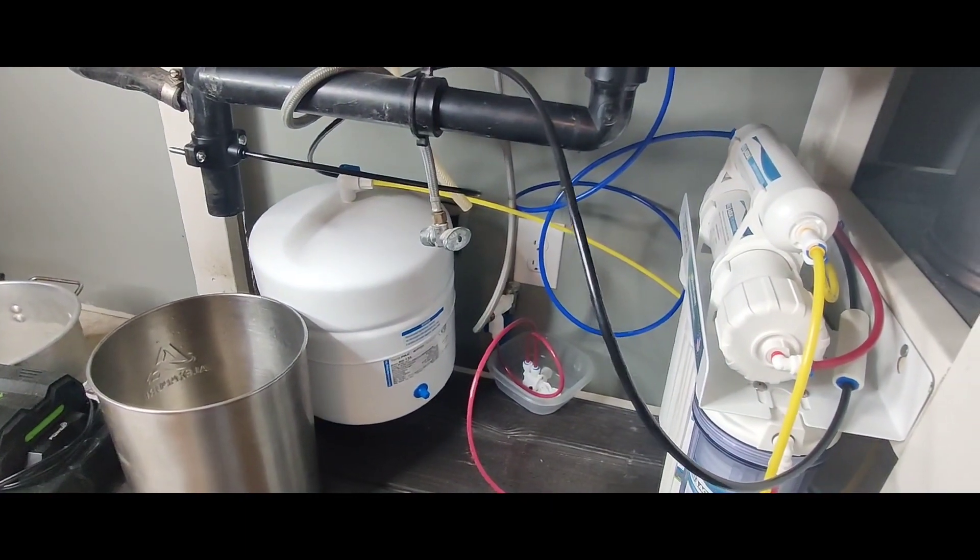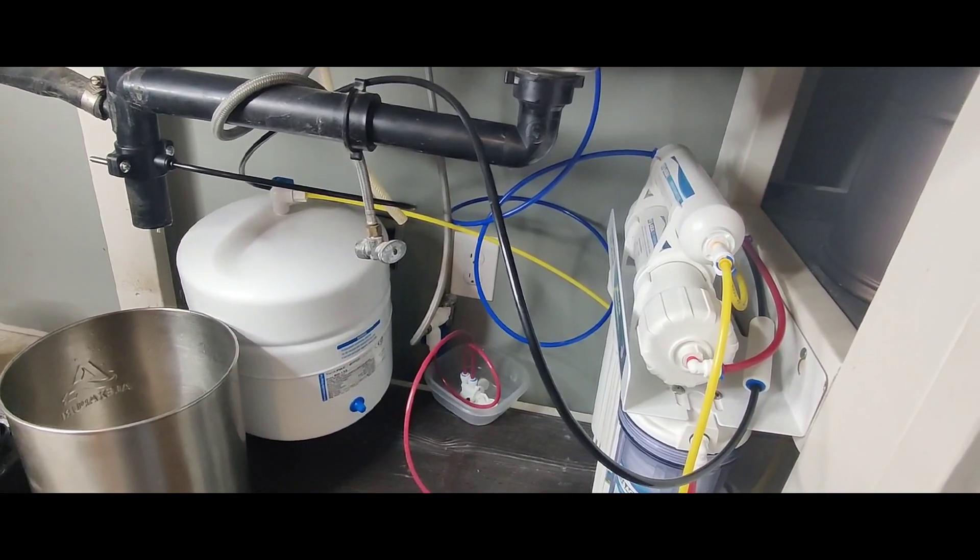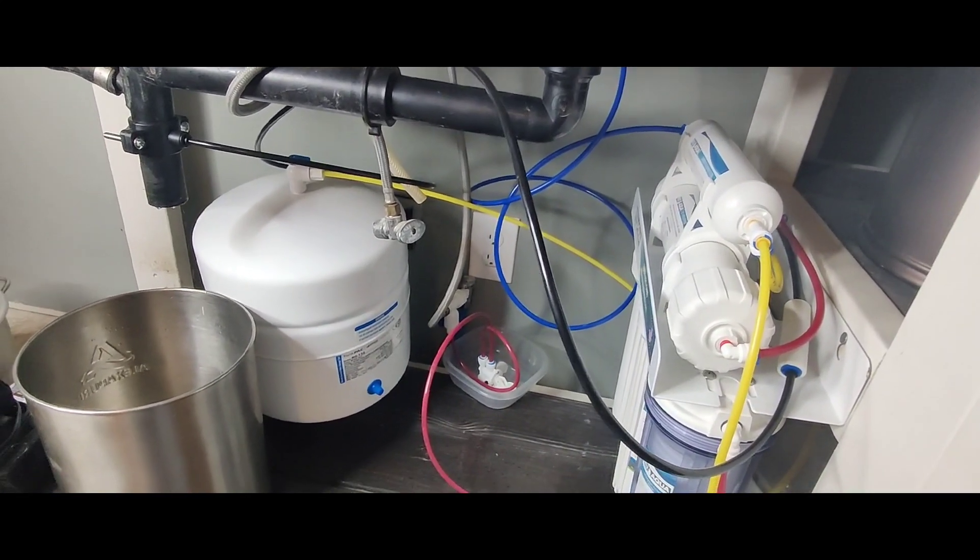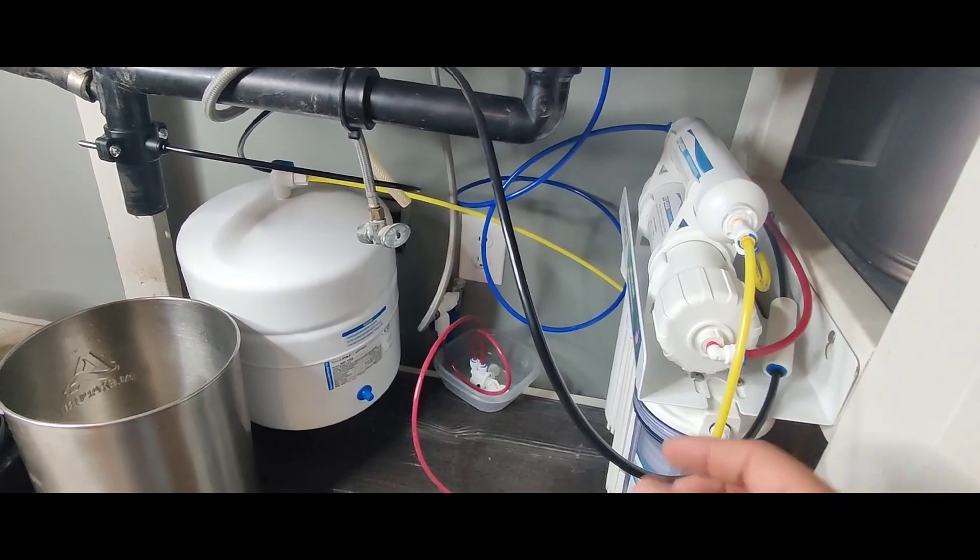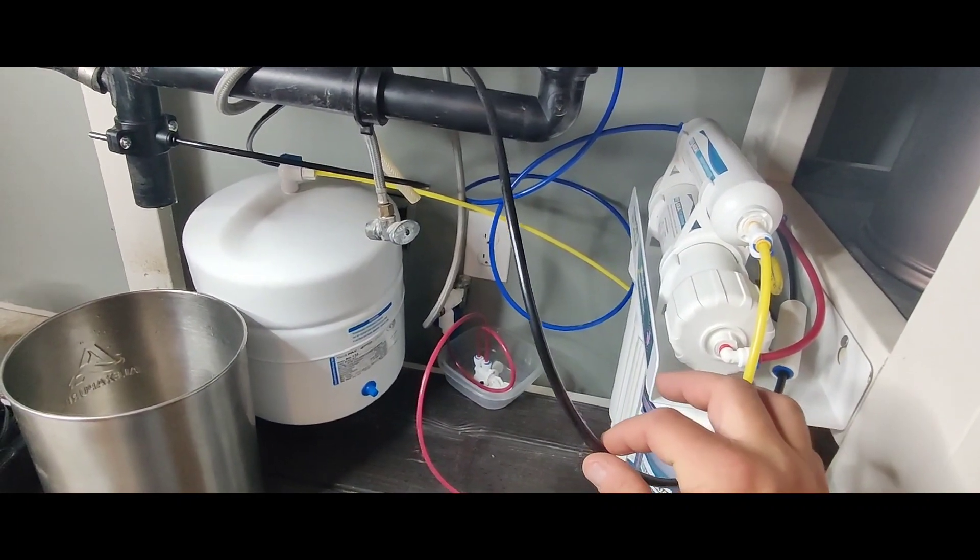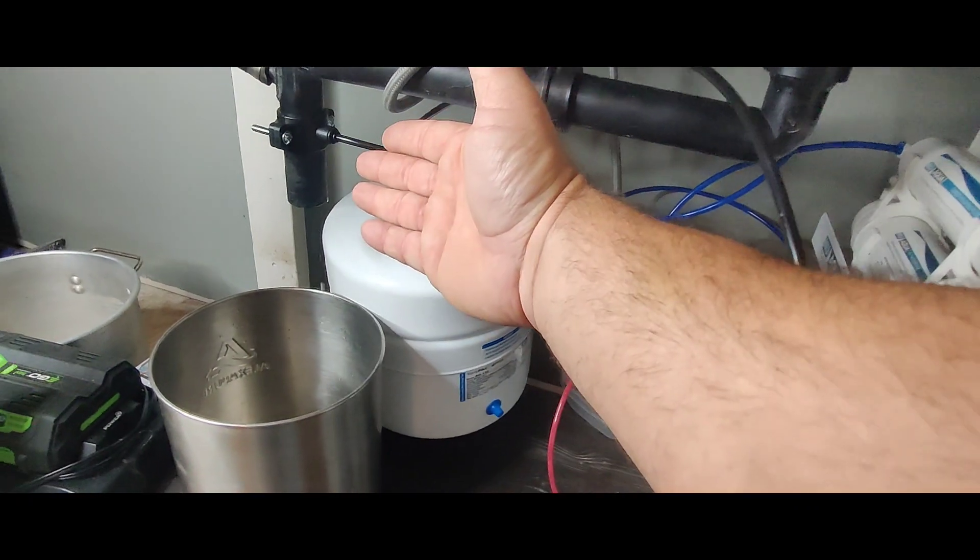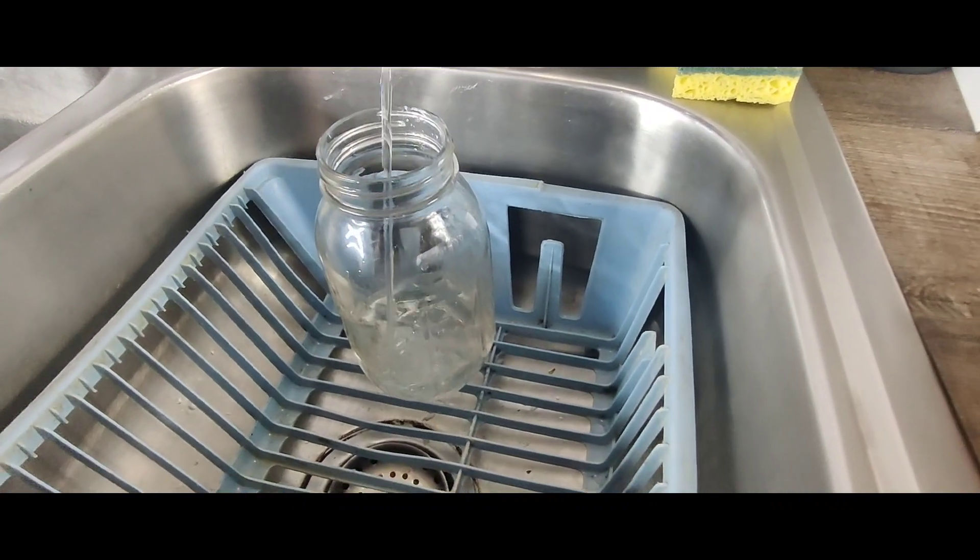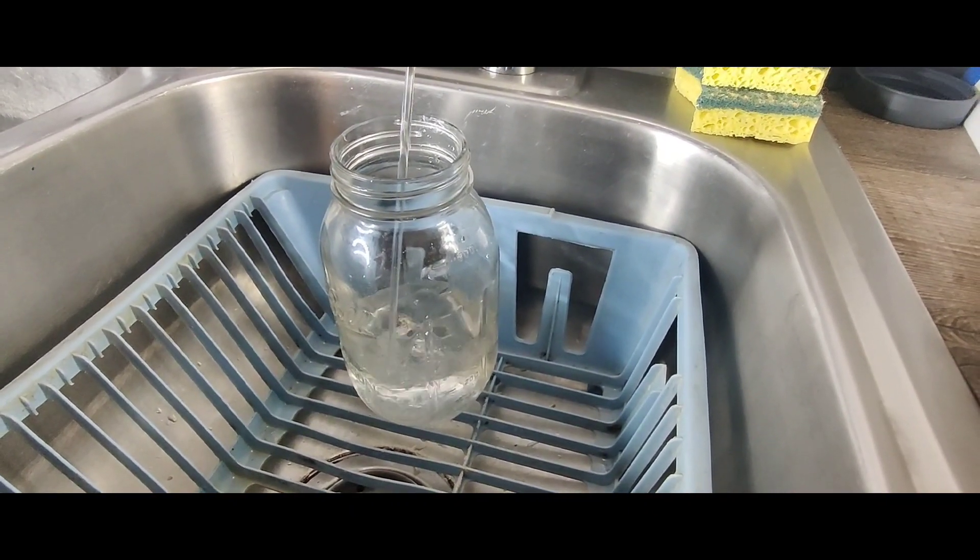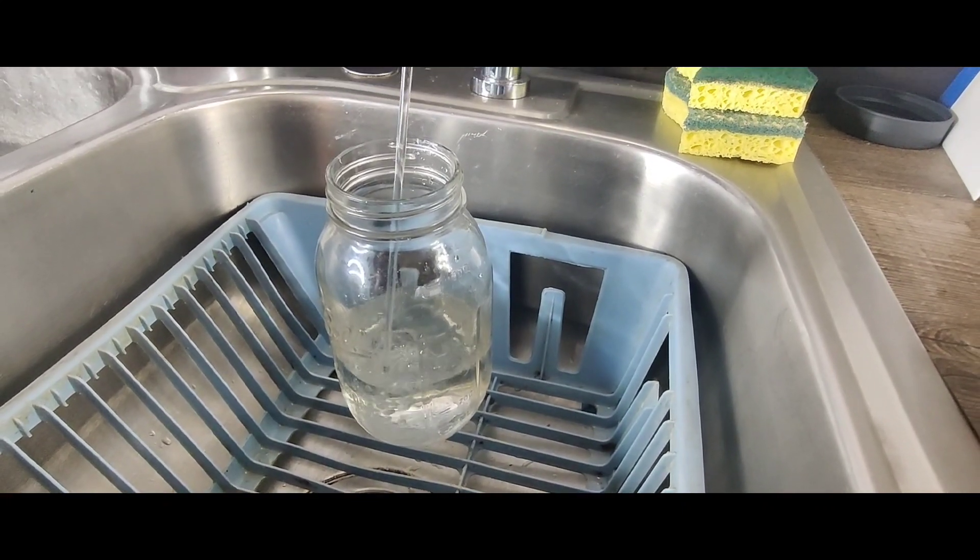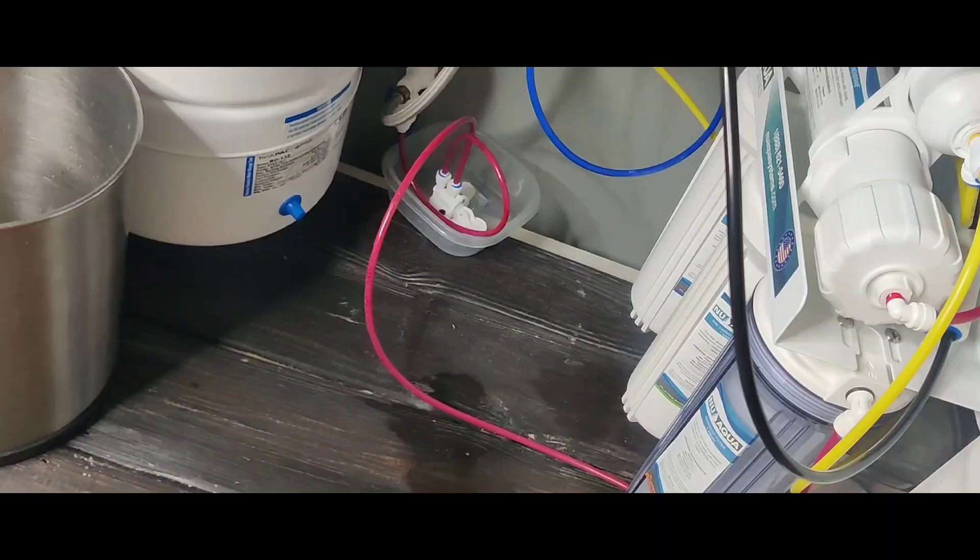Now, one thing that I didn't know about reverse osmosis filters is that you have some water runoff. This black line right here is the drain from all of your filters. From my understanding, this is where all the funky water goes. It's been pulled out of the water. This is the water you don't want. It goes down the drain. Now, I've been using this water for about a week now. It tastes great. I mean, it's like drinking bottled water. And, this is about as much water pressure as you get out of that lead-free faucet that they sent you.